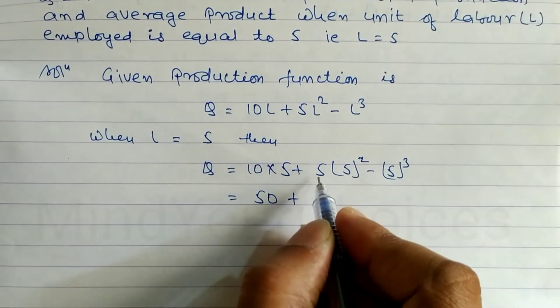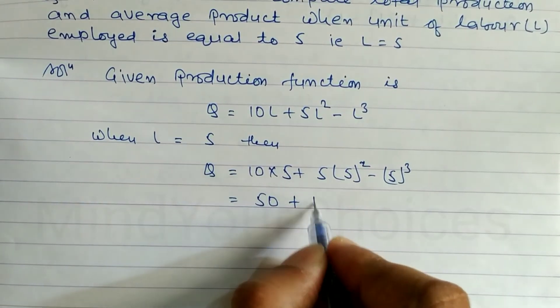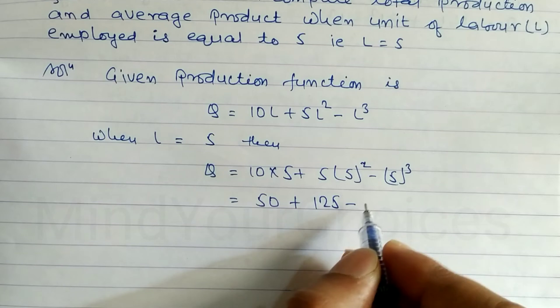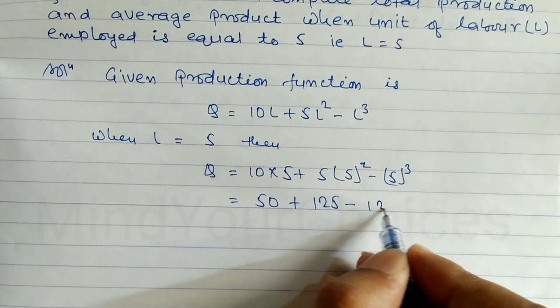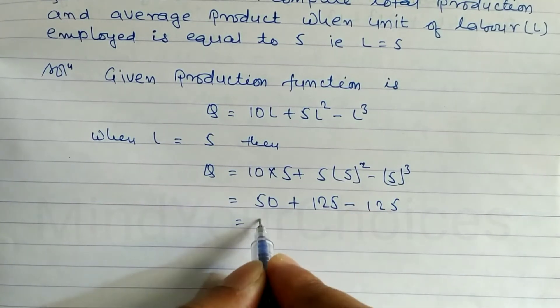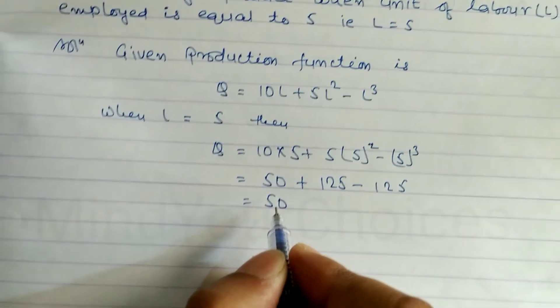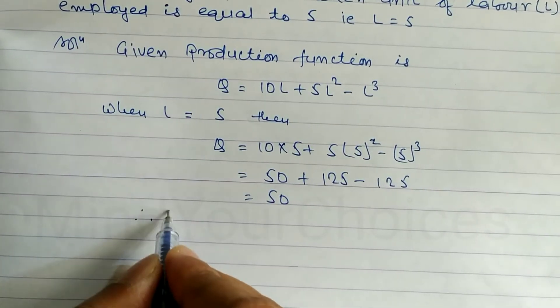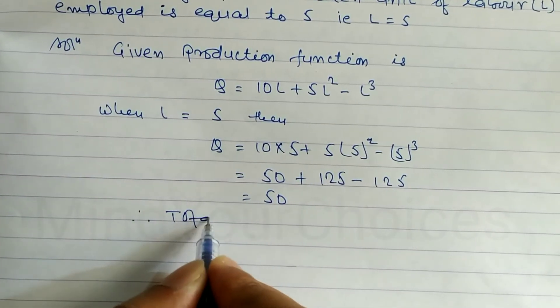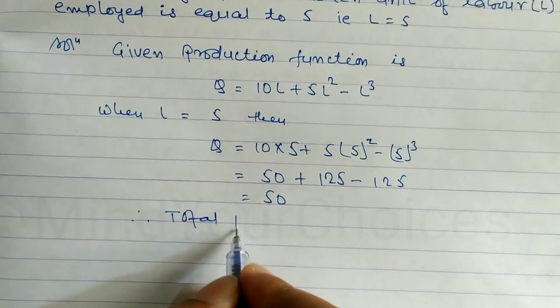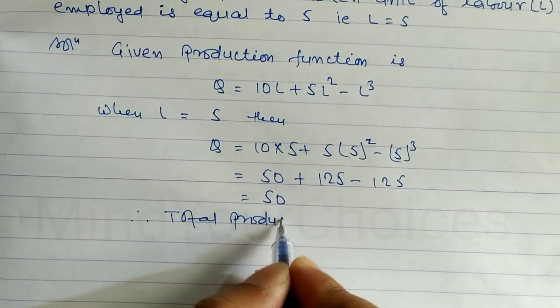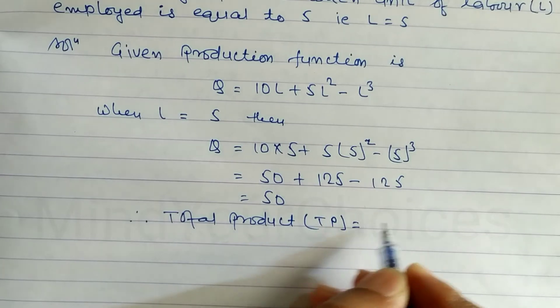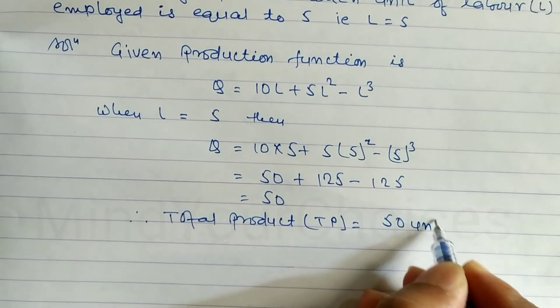Plus 5 squared is 25, 25 times 5 is 125. Minus 5 cubed, which is 5 times 5 times 5, equals 125. These cancel out, so we get 50. Therefore, total product (TP) is equal to 50 units.